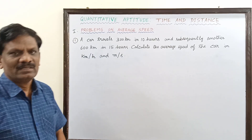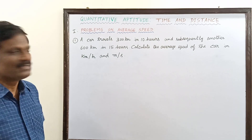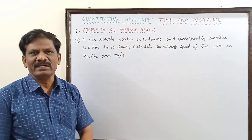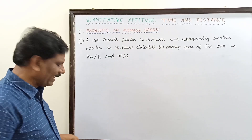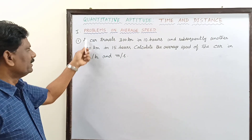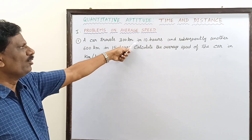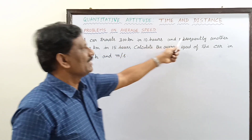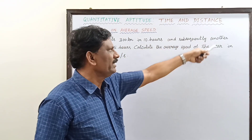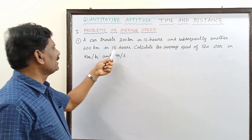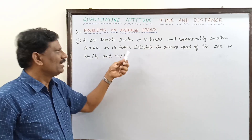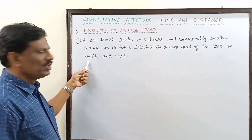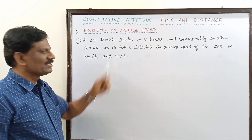Hi students, now we are going to solve the first numerical problem in the topic 'Average Speed' under the main topic 'Time and Distance.' Your car travels 300 km in 10 hours, and subsequently — that is, continuously — it travels another 600 km in 15 hours. Calculate the average speed of the car in both units: kilometer per hour as well as meter per second.